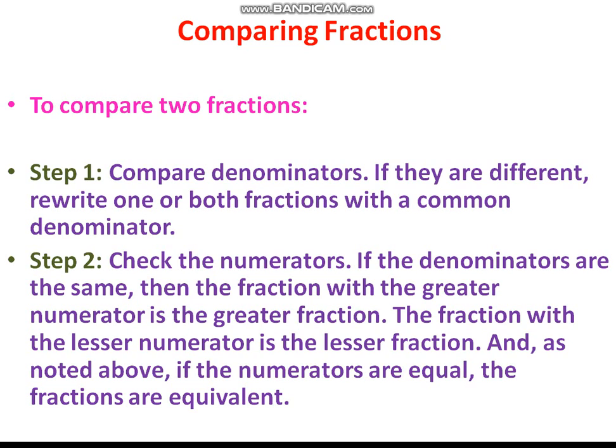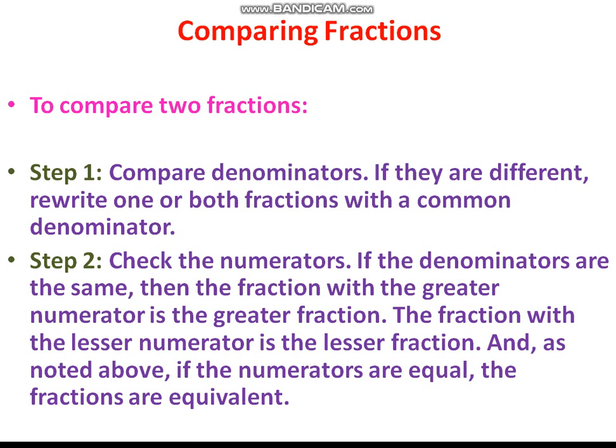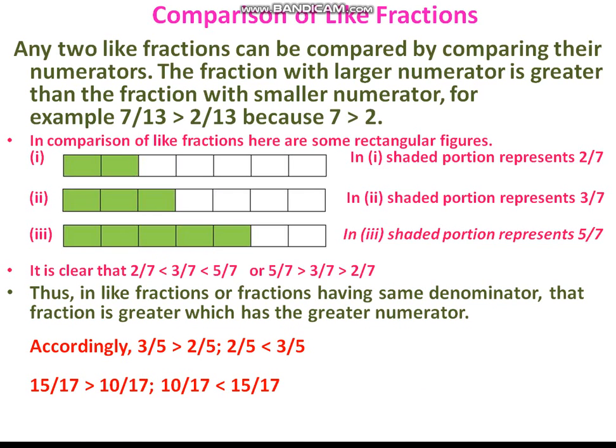Step one: compare the denominators of the fractions. If they are different, rewrite one or both fractions with a common denominator. We have to write both fractions with the same denominator. Step two: check the numerators. If the denominators are the same, then the fraction with the greater numerator is the greater fraction, and the fraction with the lesser numerator is the lesser fraction. If the numerators are equal, the fractions are equivalent.